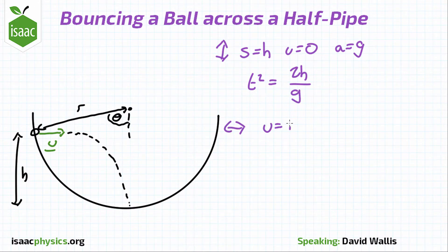Horizontally, there is no acceleration, so u equals r sin theta over t. Eliminating t gives u.